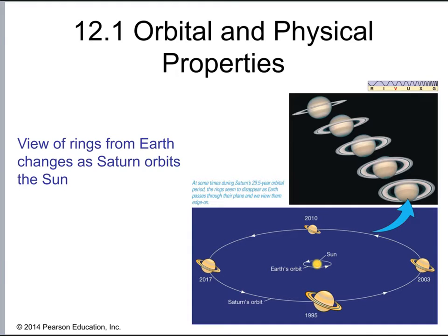When you look at Saturn in the night sky and you look at its rings, the orientation of the rings changes relative to us depending on where Saturn is and where Earth is in their respective orbits. You can see the rings may look dead-on straight and very thin, or you may see them at an angle with more width. You can also see a gap in the rings called the Cassini division — we'll talk about that later. The giant ring system is basically what makes Saturn one of the most distinctive planets in the solar system.